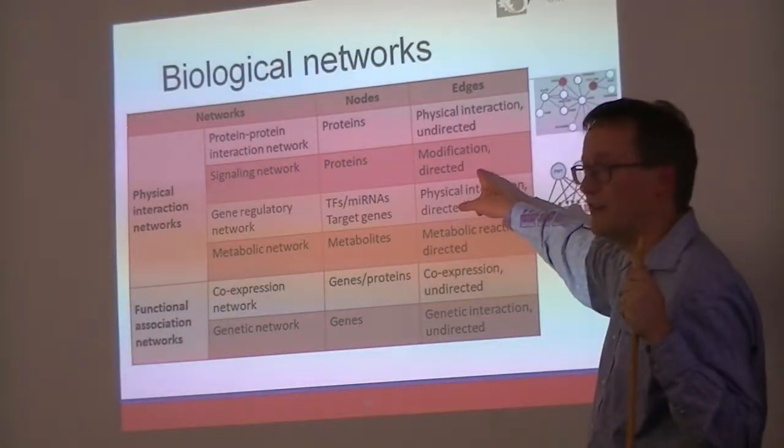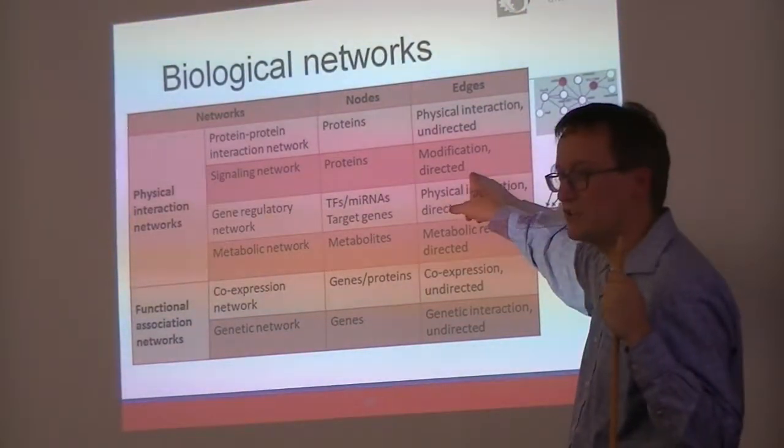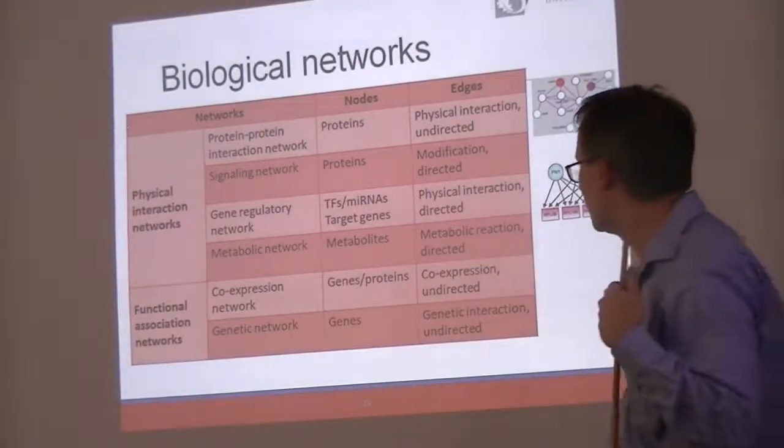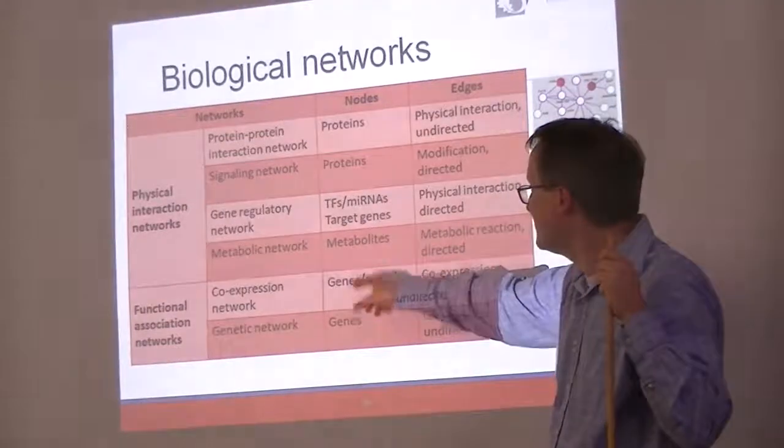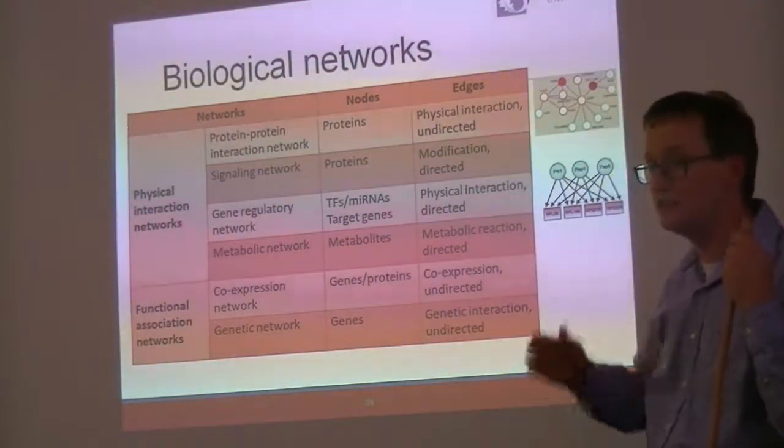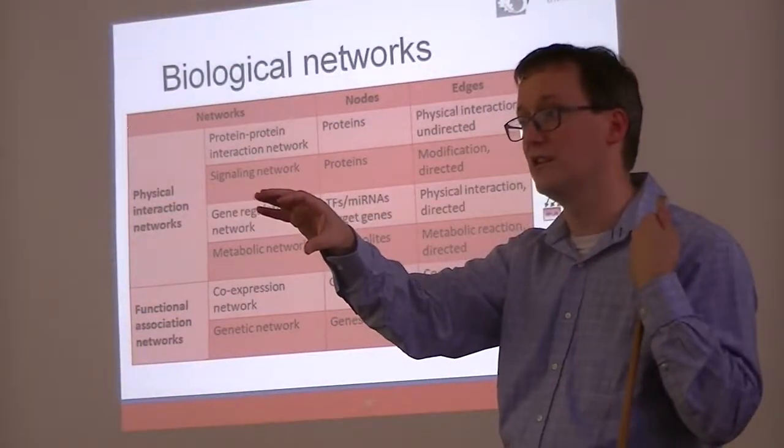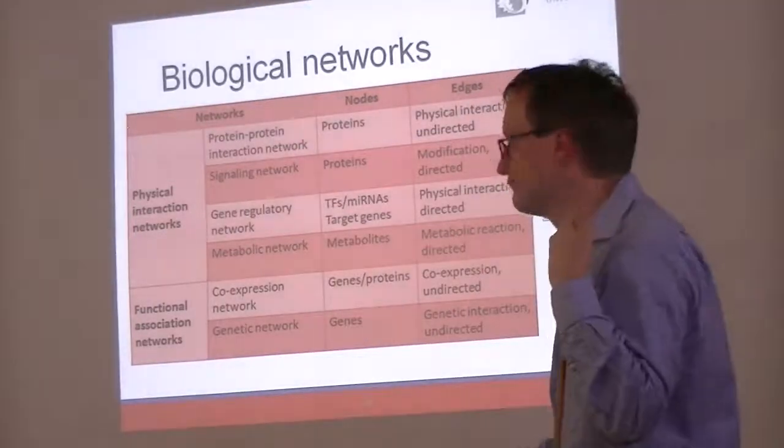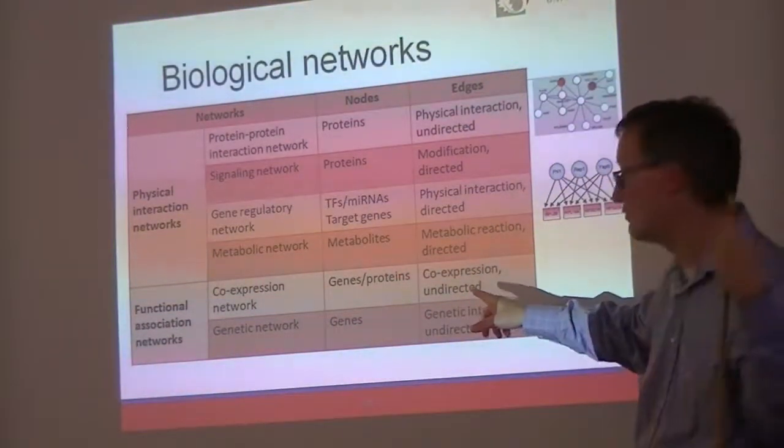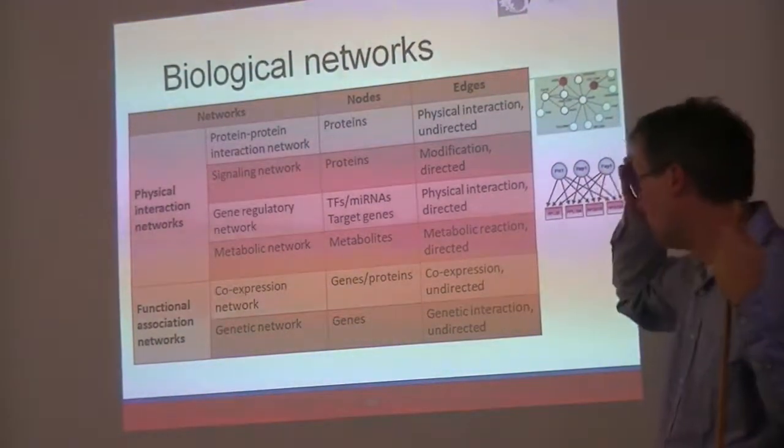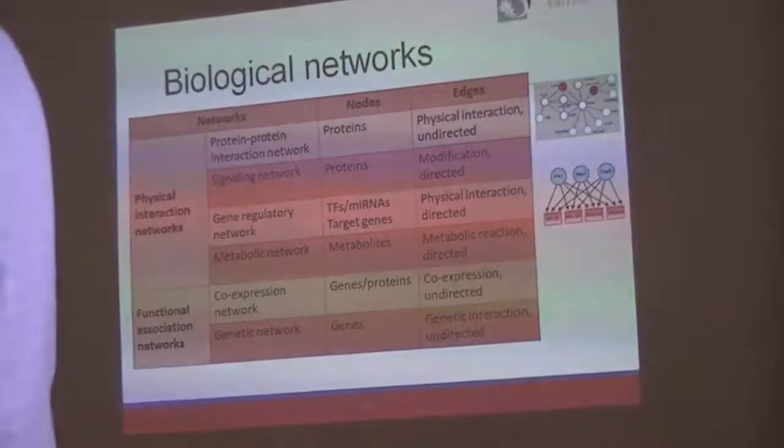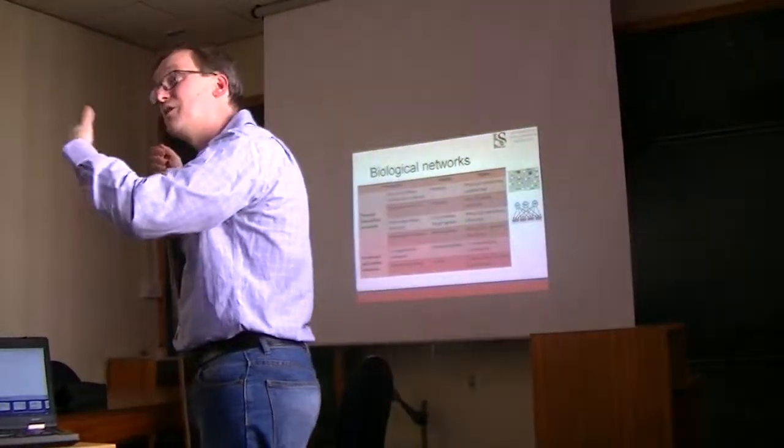In a signaling network, you have proteins that are interacting with other proteins, but in this case it's a directed interaction, because one is impacting the other in a way that the other is not impacting the one. It's a directional relationship. We have transcription factors, we have microRNAs, these are gene regulatory networks. Again, we're working off of physical interaction. These interactions are directed. We would say this microRNA affects these genes, but we wouldn't say that those genes affect that microRNA. Co-expression is quite different. It's an undirected relationship. It's a correlation of appearance across different experiments. And genetic networks can be represented in this way as well.